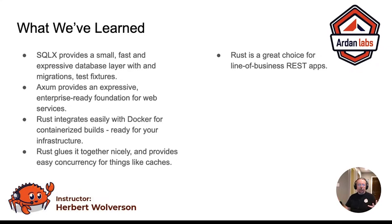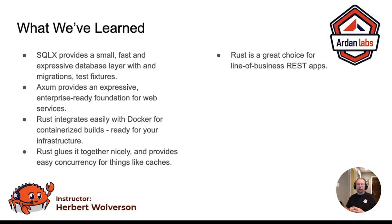So what have we learned? SQLX provides a lean, mean, expressive database layer with migrations and a test fixture system. Axum provides an expressive, enterprise-ready foundation for web services. Rust integrates great with Docker and containerized builds, and Rust glues everything nicely together, giving you small, really fast, and relatively easy-to-build REST APIs. Because Rust is so great with concurrency, it's easy to add things like caches without worrying about accidentally corrupting your data — Rust simply won't let you compile if you have a problem. In my opinion, Rust is a great choice for line-of-business REST apps where you need something small or high-performance.